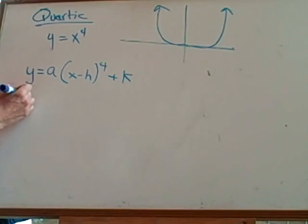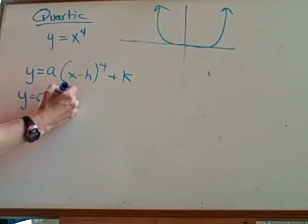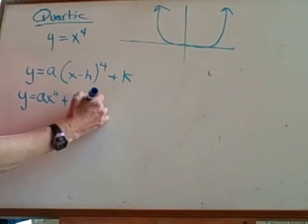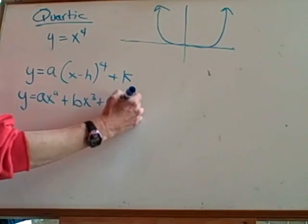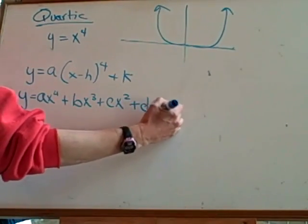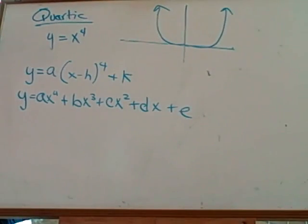The other form, which is more of a general form, is going to look like this: ax to the fourth, plus bx cubed, plus cx squared, plus dx, plus e.